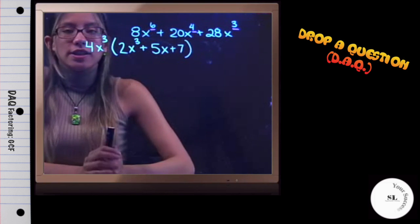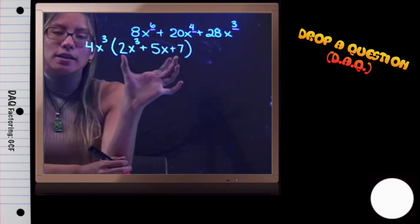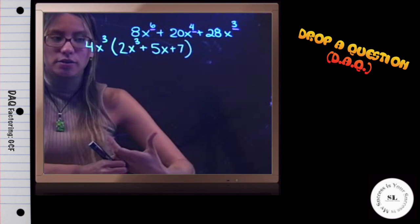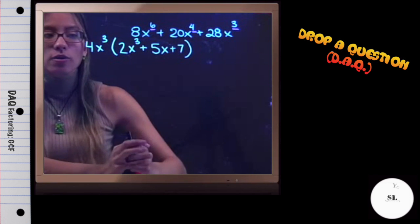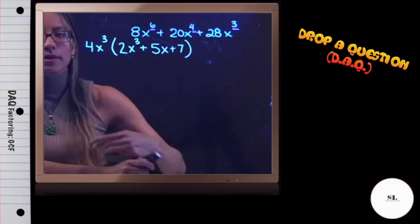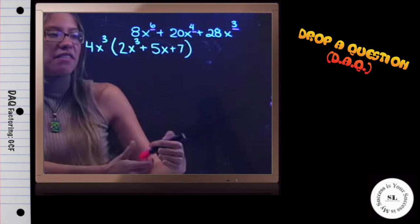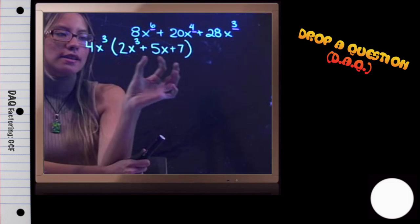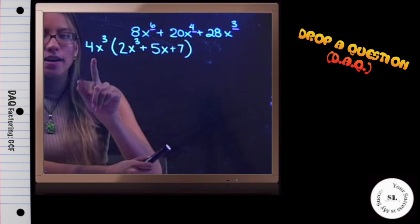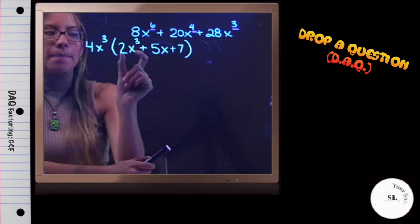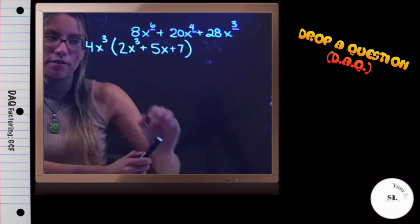Once you have a GCF, that doesn't mean you're done. Always double-check if what you have inside the parentheses can still be factored. This one had a GCF, but we still have a trinomial—a trinomial means we have three terms. So now think: is there anything else I can factor? Is there a GCF inside? Sometimes you need to check again. But if you did it correctly the first time, you should not have a GCF that remains.